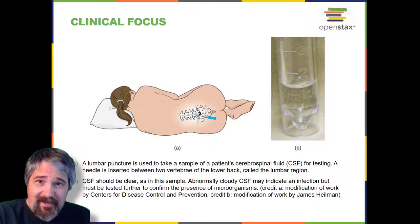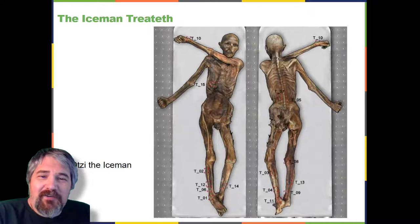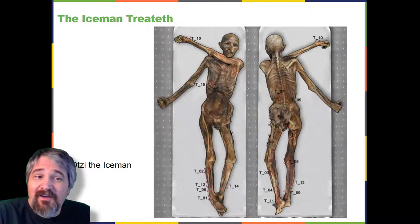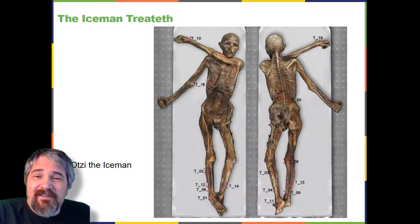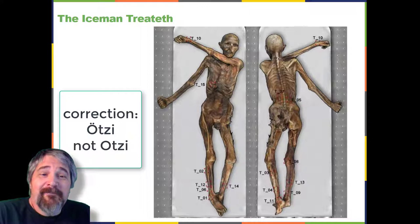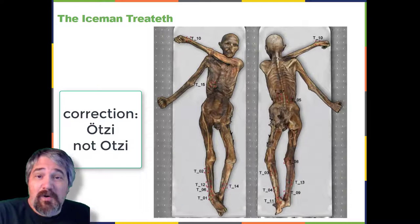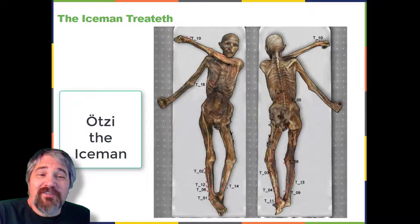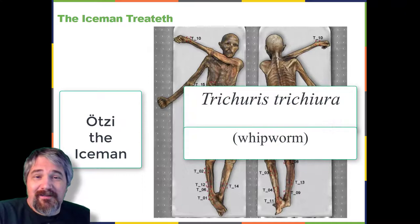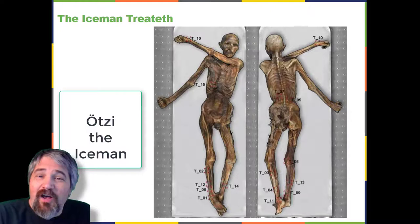The Iceman Treateth. Prehistoric humans had a very limited understanding of the causes of diseases, and various cultures developed different beliefs and explanations. While many believed that illness was punishment for angering the gods or was simply the result of fate, archaeological evidence suggests that prehistoric people attempted to treat illnesses and infections. One example is Otzi the Iceman, a 5,300-year-old mummy found frozen in the ice of the Ötztal Alps on the Austrian-Italian border in 1991. Researchers discovered he was infected with the eggs of the parasite Trichuris trichiura and also showed evidence of Borrelia burgdorferi, the bacterium that causes Lyme disease.